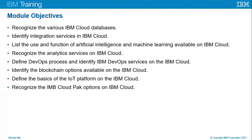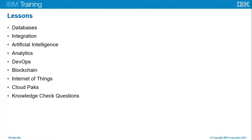Let's quickly have a look at the main lessons for this unit. We will start by focusing on databases, move on to integration, then AI, followed by analytics, and then DevOps as well as blockchain. We'll look at Internet of Things, Cloud Packs, and then lastly follow up with a quick summary and some knowledge check questions.